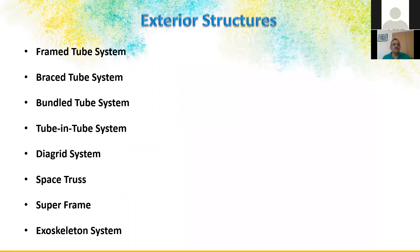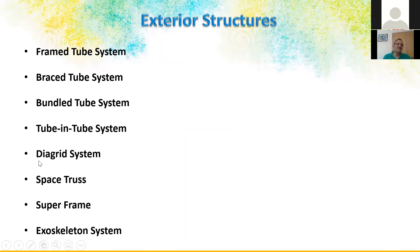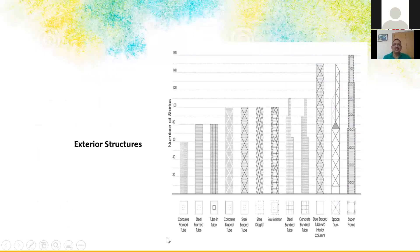Exterior structural systems for high-rise include frame tubes, braced tubes, bundle tubes, cubic tubes, diagrid — which became very popular recently — space truss systems, superframe systems, and exoskeleton systems. Applicability: up to 60 floors you can use a concrete frame tube; steel frame tube up to 80 floors due to steel's greater resilience; tube-in-tube with concrete; concrete braced tubes and steel braced tubes; diagonal systems; exoskeleton; and steel bundle tube.